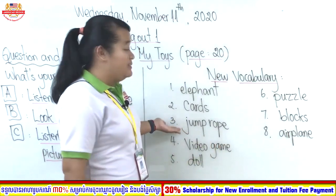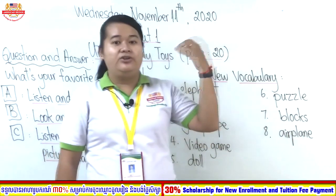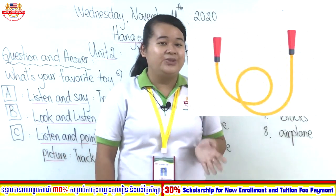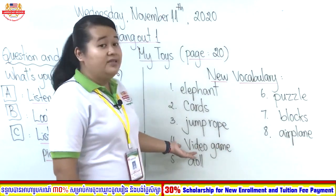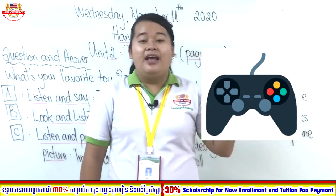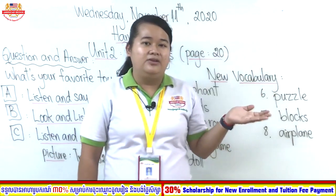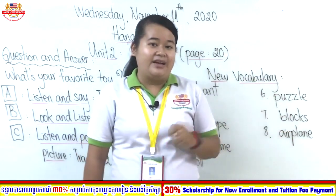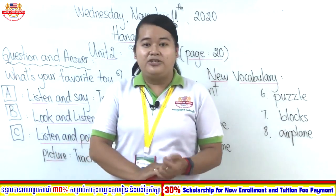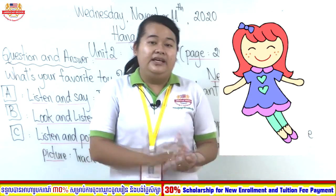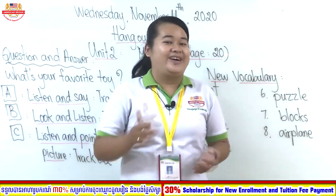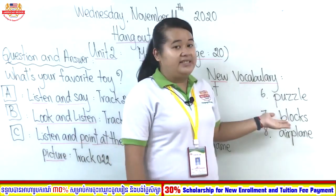Number three is jump rope. Let me show you the picture — this is jump rope, which you can use to jump. Have you played that one? Number four is video game. Let me show you — this is a video game that you can play at home when you have free time or feel bored. Number five is doll. Let me show you the picture — mostly girls like to play with dolls, while boys like toy cars or trucks.